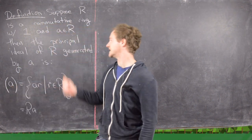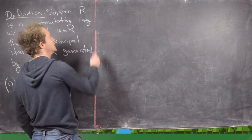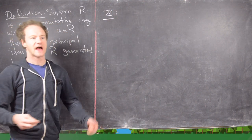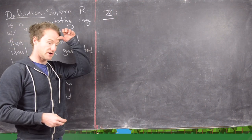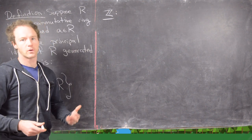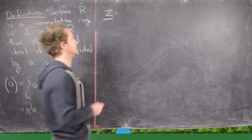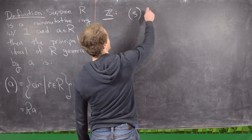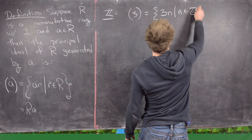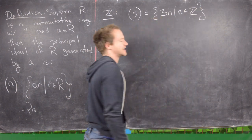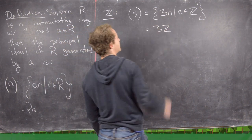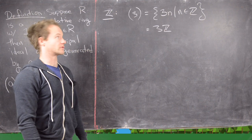Now that we've proved this is actually an ideal, let's look at some examples. First, let's look in our favorite ring Z. Commutative rings with one are in some ways just generalizations of the integers, so the integers are a really important ring to understand. Let's look at the ideal generated by 3: that's equal to 3 times N as N runs through all of Z. Notice that's exactly what we used to call 3Z when we were talking about this in groups.